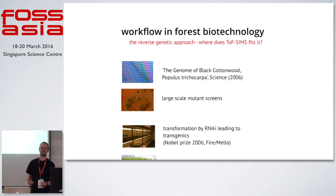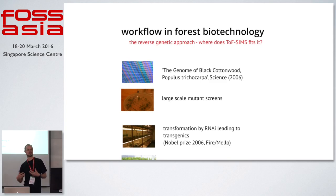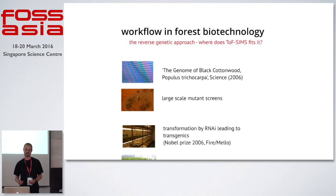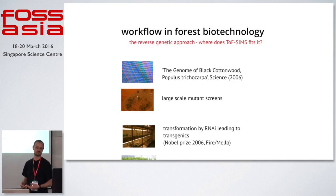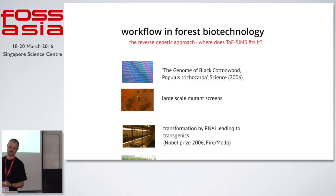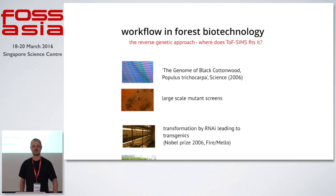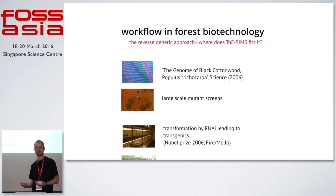The idea for the future is that we want to make trees that are genetically modified so the actual physical material — the wood — becomes more usable for different applications. For example, in pulp and paper, you need a lot of chemicals to extract the cellulose from wood. If we could change the chemistry of the wood by making transgenic trees, we could make the process cheaper and cleaner.